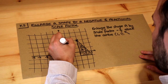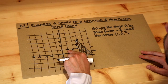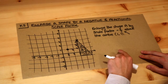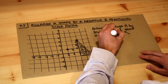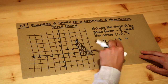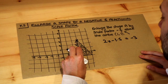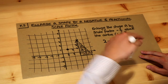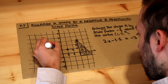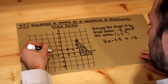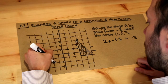Looking at the centre of enlargement, this first point is two squares right and two squares up. If we multiply 2 by minus 1.5: two times 1.5 is 3, and positive times negative is negative, so we get minus 3. Those two squares right become three squares left, and the two up become three down — the opposite direction when negative. So we end up with this point here.